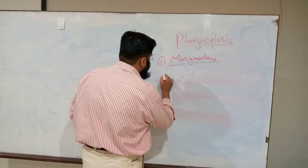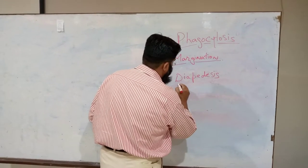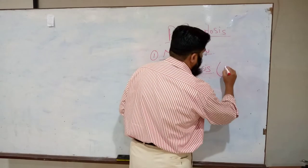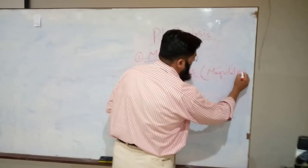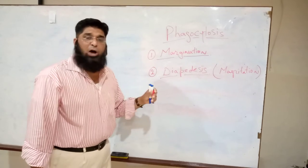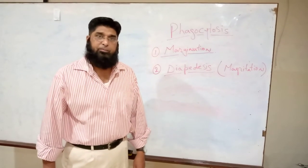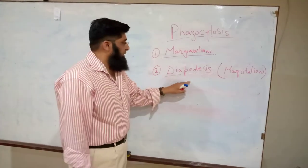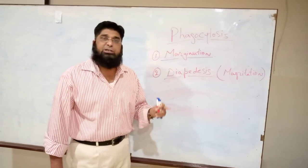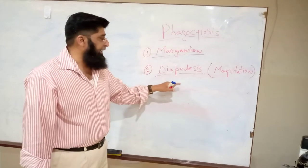Stage two: Diapedesis. This stage is also called migration. In this stage, the phagocytic cells leak out from the blood vessels and collect in the interstitial space or tissue spaces. Diapedesis is the process during which neutrophils, monocytes, and macrophages leak out of the blood vessels and become arranged in the tissue spaces.